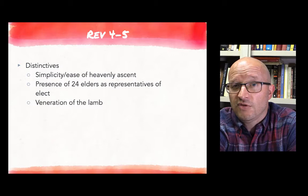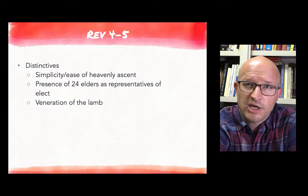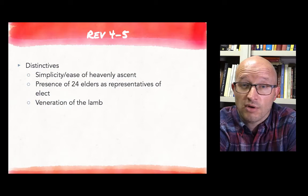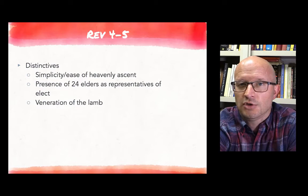Perhaps the most distinctive element of Revelation 4 and 5 is what we see in chapter 5, which is the veneration of the Lamb. Alongside the veneration of God who sits on the throne is the veneration of the Lamb, and this is striking in comparison to the other traditions.